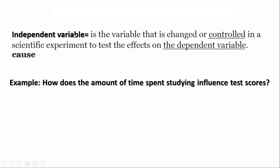The independent variable is the variable that is changed or controlled in a scientific experiment to test the effects on the dependent variable.